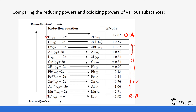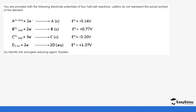Let's look at sample questions about oxidizing and reducing agents so you can see how to answer these questions. You are provided with the following electrode potentials of four half-cell reactions. The letters A, B, C, D are used and do not represent the actual symbols of the elements.